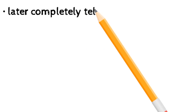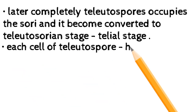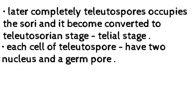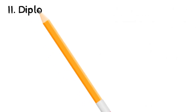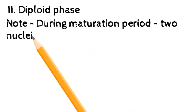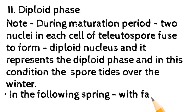In the same sorus, first the teliospores gradually occupy the sori and it becomes converted to teliosori — the telial stage. Each cell of the teliospore has two nuclei and a germ pore. They do not germinate readily but undergo a period of rest and carry the fungus to the next growing season. During maturation, the nuclei in each cell of the teliospore fuse to form a diploid nucleus — representing the diploid phase — and in this condition the spore tides over the winter.